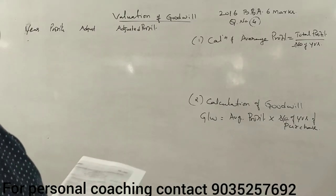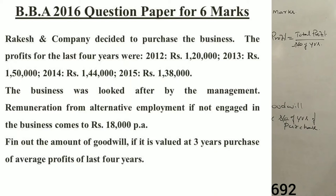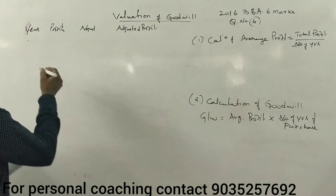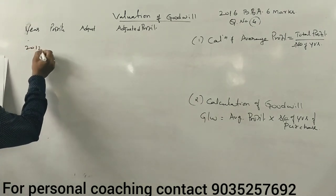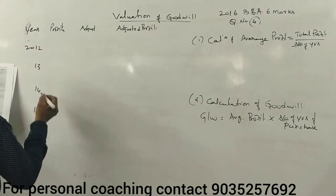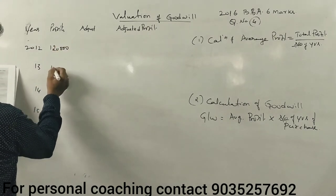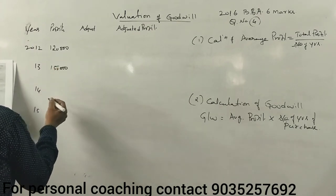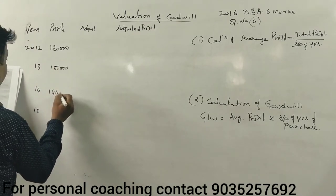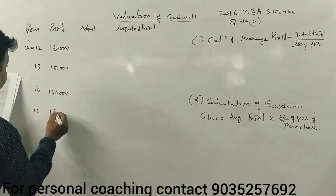See guys, BBE is in a question. In 2016, I have asked the fourth question. The fourth question: Rakesh and Company decided to purchase a business. The profits for the last four years — 2012, 13, 14, 15 — are: 1,20,000; 1,50,000; 1,44,000; 1,38,000.